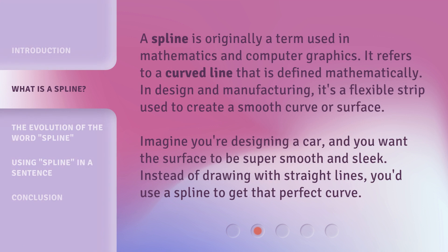A spline is originally a term used in mathematics and computer graphics. It refers to a curved line that is defined mathematically. In design and manufacturing, it's a flexible strip used to create a smooth curve or surface. Imagine you're designing a car and you want the surface to be super smooth and sleek. Instead of drawing with straight lines, you'd use a spline to get that perfect curve.